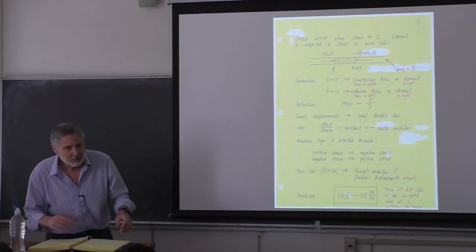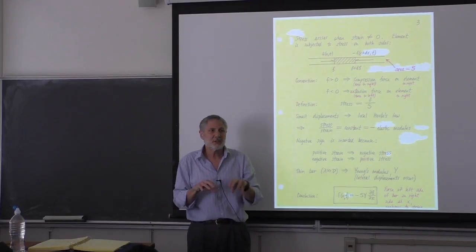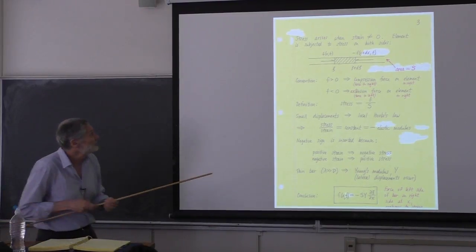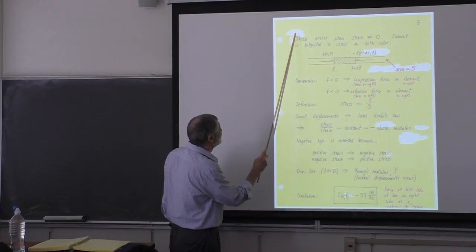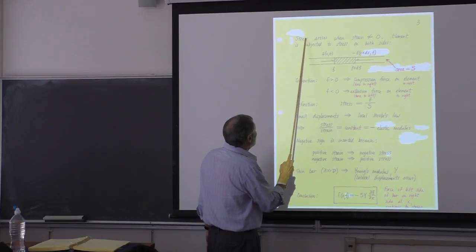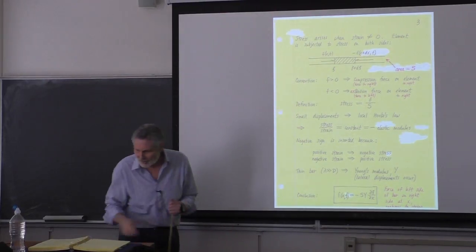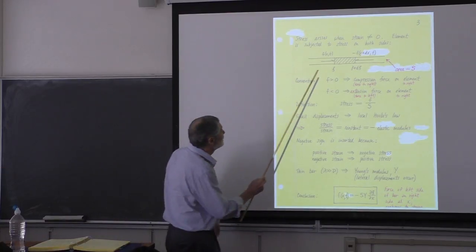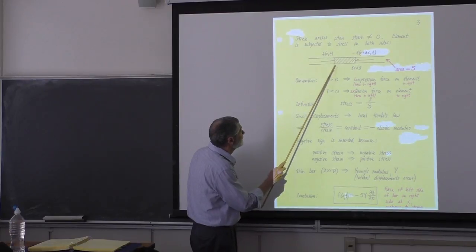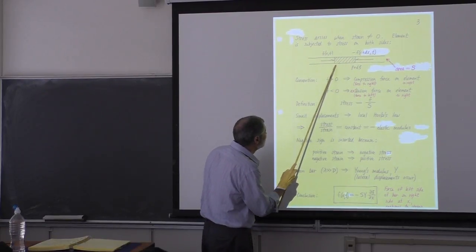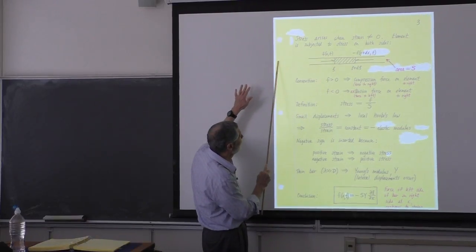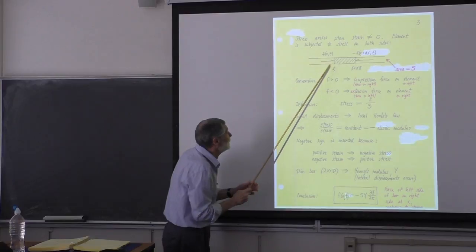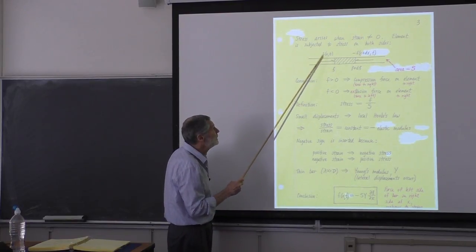We measure the deformation of a solid by the strain, ∂ξ/∂x. What about forcing? Forces cause straining — I've got to exert a force to cause a strain, to change it from equilibrium. We look at our element and in general there's going to be a force from the left part of the bar on our element, and a force from the right part on our element. This force F can be a function of space and time.